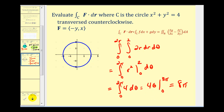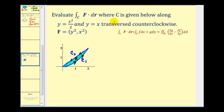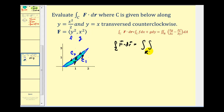Let's take a look at another example. We want to evaluate the line integral where C is the region bounded by y = x²/2 and y = x, traversed counterclockwise. The region satisfies Green's Theorem, so we'll convert to a double integral over region R. Here little f is the x component and g is the y component of the vector field. The line integral equals the double integral over R of the partial derivative of g with respect to x — that's 2x — minus the partial derivative of f with respect to y — that's 2y — dA.